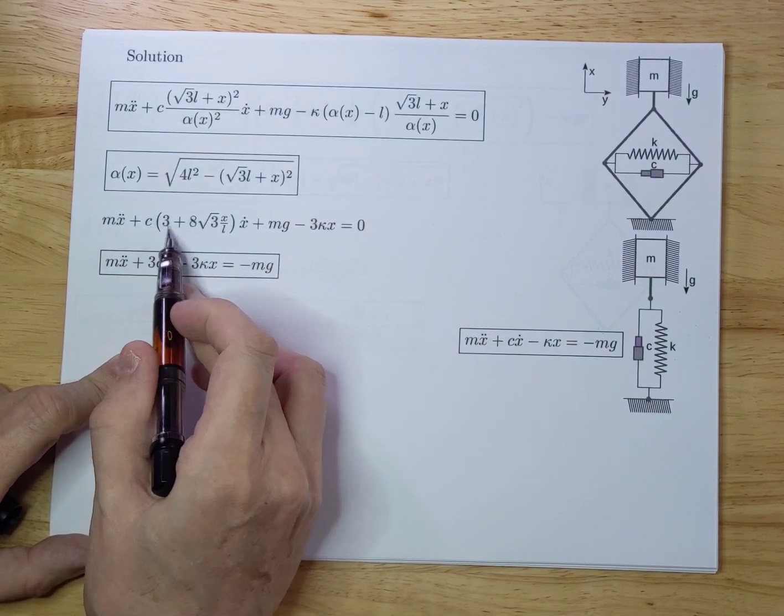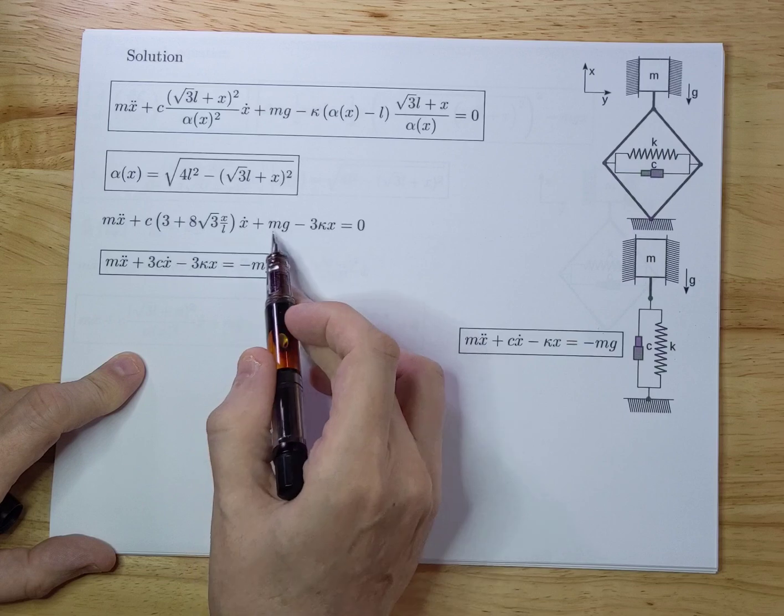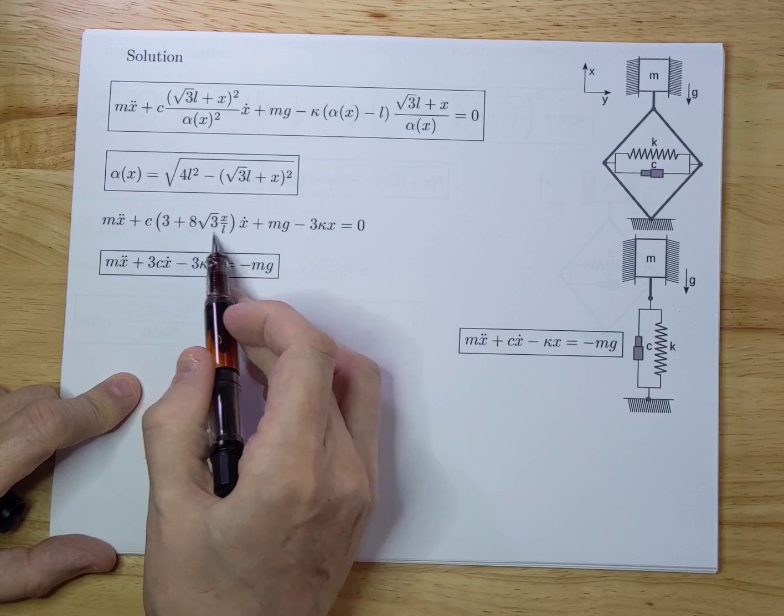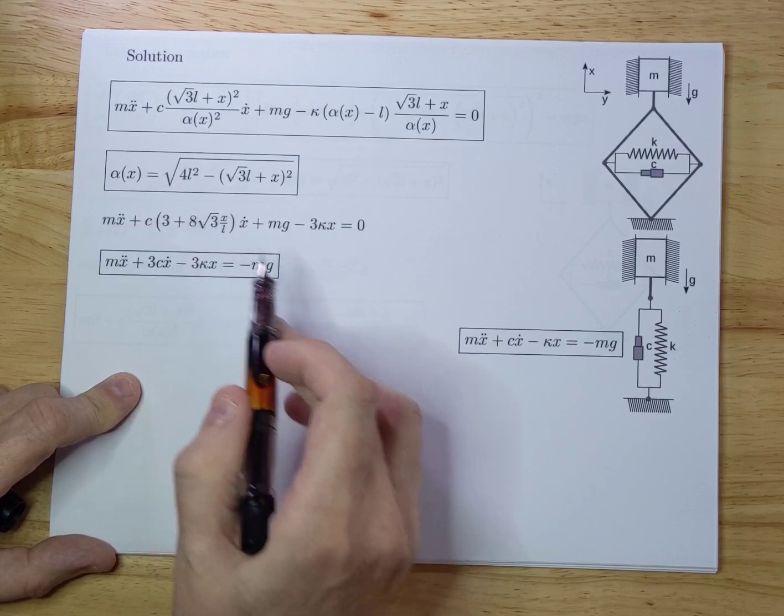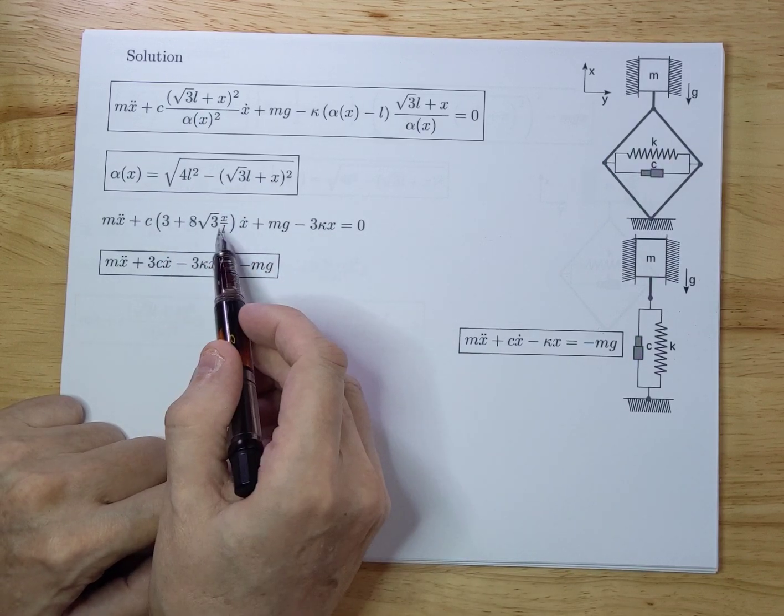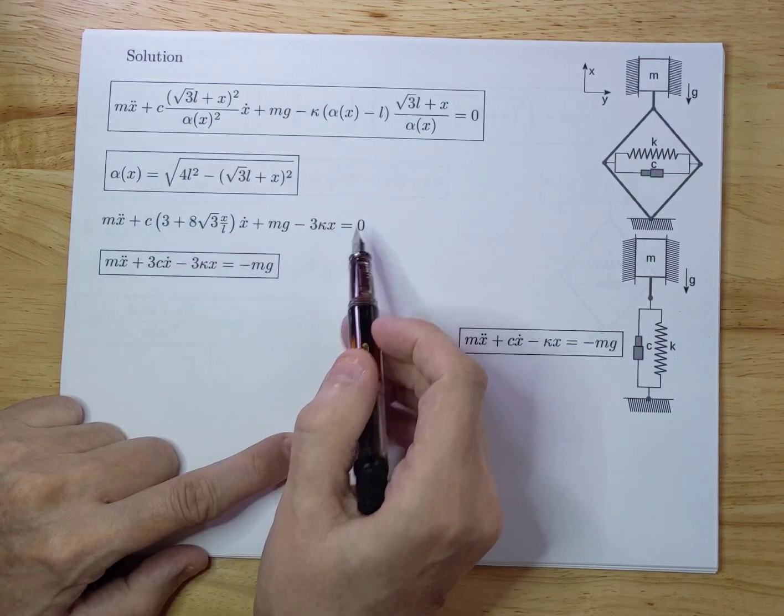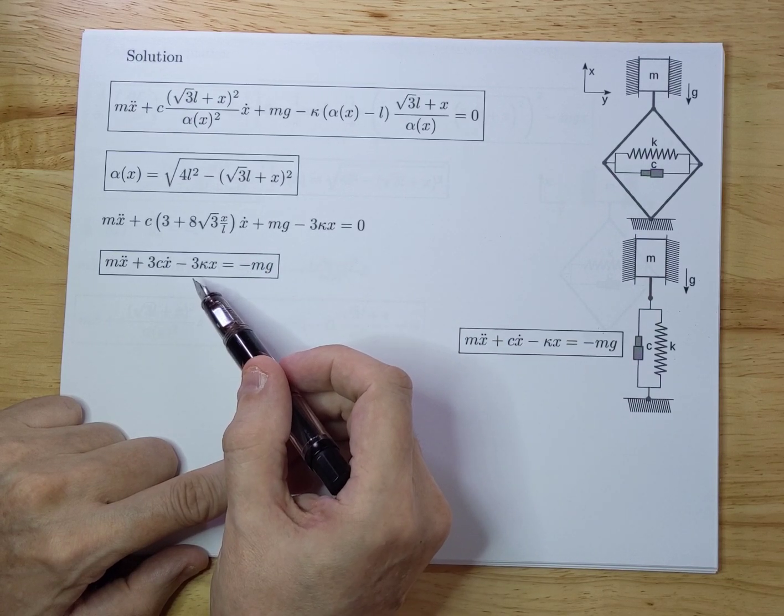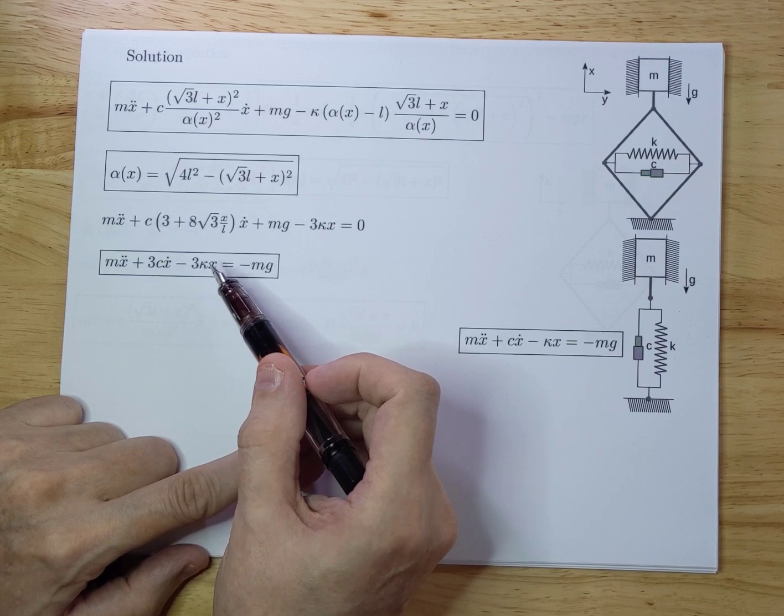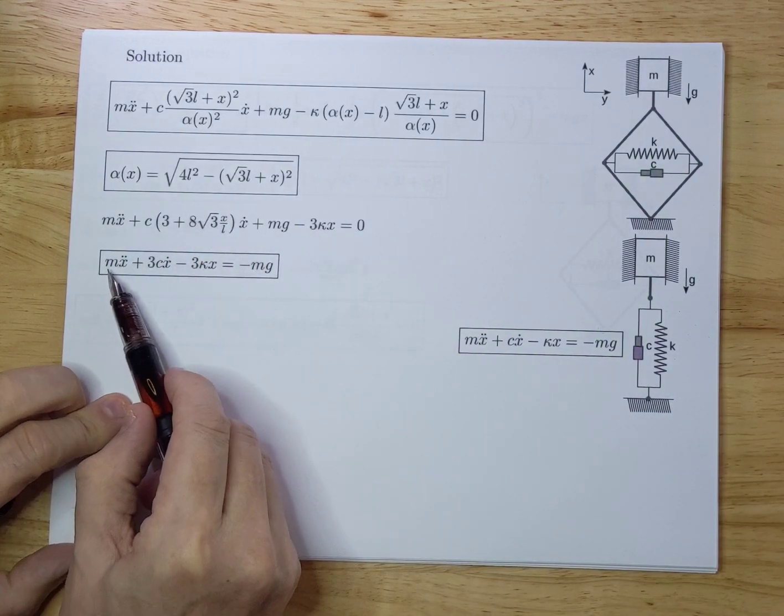You get mX double dot plus c times 3 plus k times square root of 3 x over L times X dot plus mg minus 3k times x equals zero. You can still see that there is an issue here with the x over L. As a second approximation, I am going to assume that this is small compared to 3, which is very reasonable. In most systems, practical systems, that will be the case. I do this because we can see some interesting physics coming out of it, and we can compare it with a slightly different system that has a similar function.